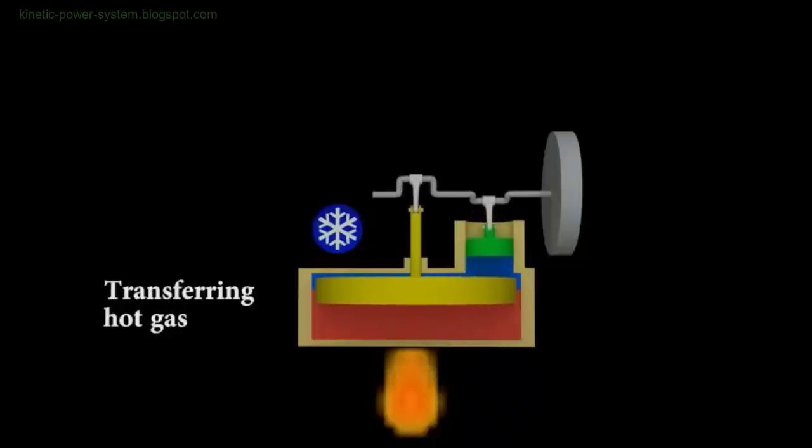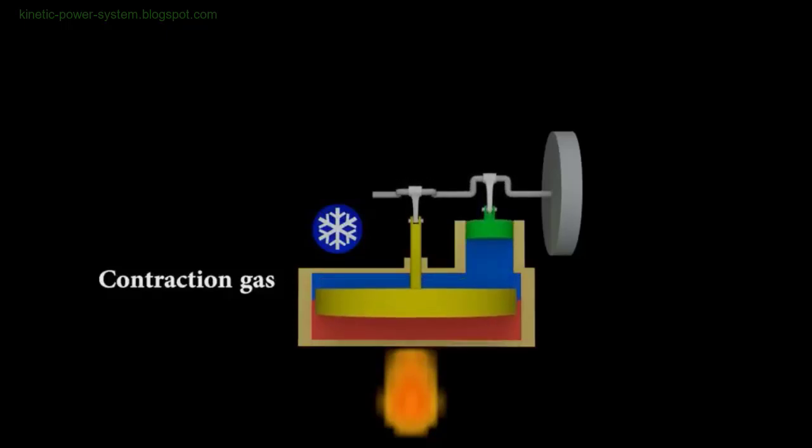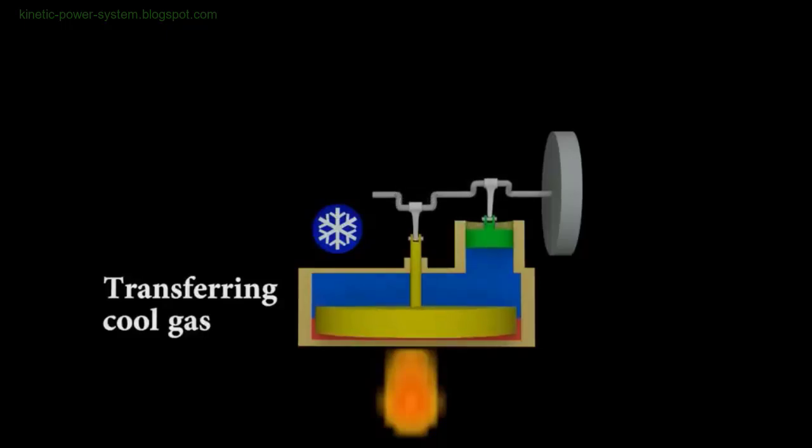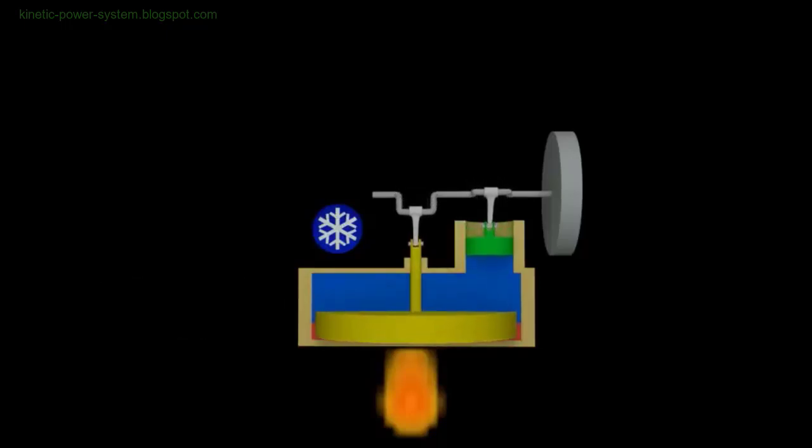The Stirling engine, invented in 1816 by Robert Stirling, is a marvel of engineering that has found diverse applications over the centuries. Its ability to generate kinetic energy through external combustion has made it valuable in various fields, from simple educational toys to powering advanced submarines.